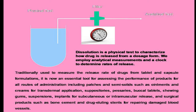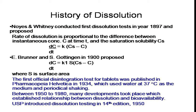Moving to the history of dissolution tests: in 1897, Noyes and Whitney conducted the first dissolution tests and gave an equation. Later, E. Brunner and S. Göttingen in 1900 proposed another equation. The first official disintegration test for tablets was published in Pharmacopoeia Helvetica in 1934, which used water at 37 degrees Celsius as the medium and periodical shaking.